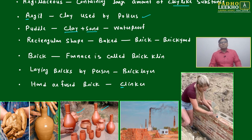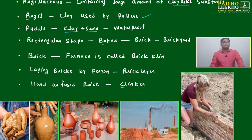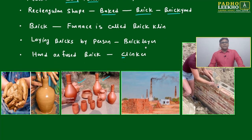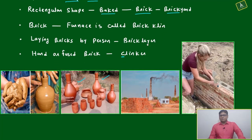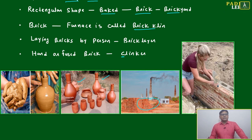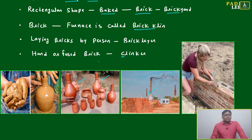That sand is purposely mixed with clay to make it waterproof. If clay is baked in a rectangular shape, it is called a brick. Wherever bricks are formed, that area is called a brickyard. The furnace or chimney used to bake bricks is called a brick kiln. This complete area is your brickyard, and this is your brick kiln.